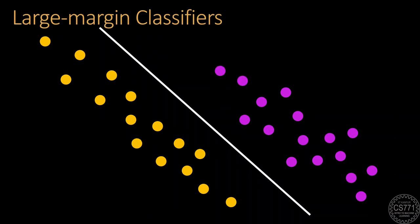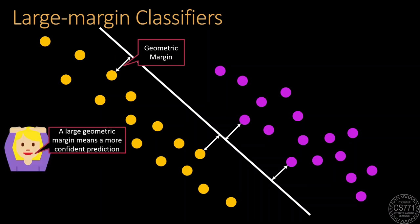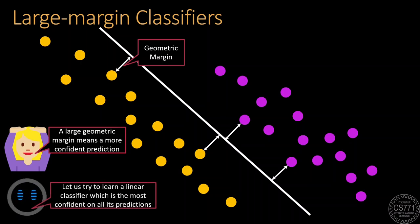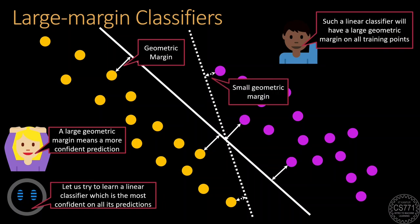Suppose for the exact same dataset, we now seek to learn not just any classifier that perfectly classifies all the data points, but one that makes confident predictions on all data points. Recall from our previous discussion that the level of confidence of a prediction made by a classifier on a data point can be measured by calculating the distance of that data point from the decision boundary. This quantity is formally called the geometric margin, and a large geometric margin means a more confident prediction. Note that we want our classifier to have a large margin on every data point — a classifier that has small margin on certain data points will not do.